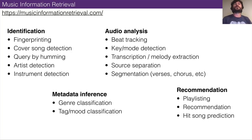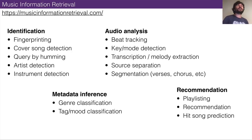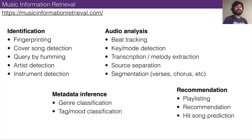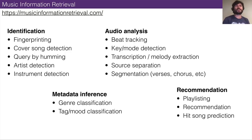Music information retrieval tasks include music recommendation — like Spotify's recommendation engine — gauging the similarity of two songs, identifying music like Shazam does, identifying cover songs or copyright violations, analyzing audio by tracking beats, segmenting audio, unmixing it, transcription, key detection, genre classification, and creating playlists. The Holy Grail is hit song prediction, which everyone has wanted to do for a really long time, but it turns out it's really difficult.